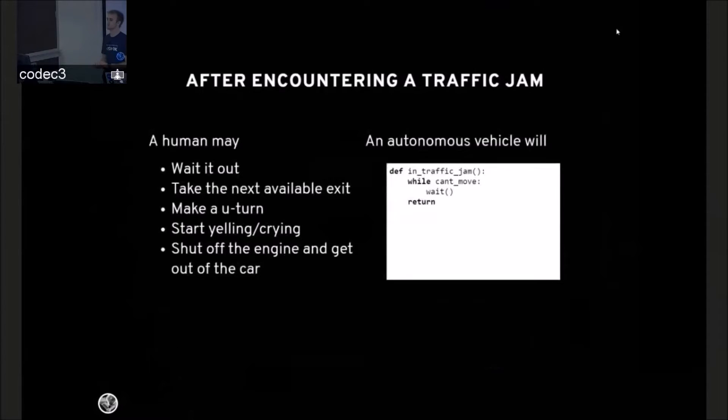So after encountering a traffic jam, a human may wait it out, make a U-turn, take the next available exit, get mad, get out of the car, whatever. But an autonomous vehicle will just wait. That's not to say that autonomous vehicle couldn't perform like a human, but we'd have to program it to do so.